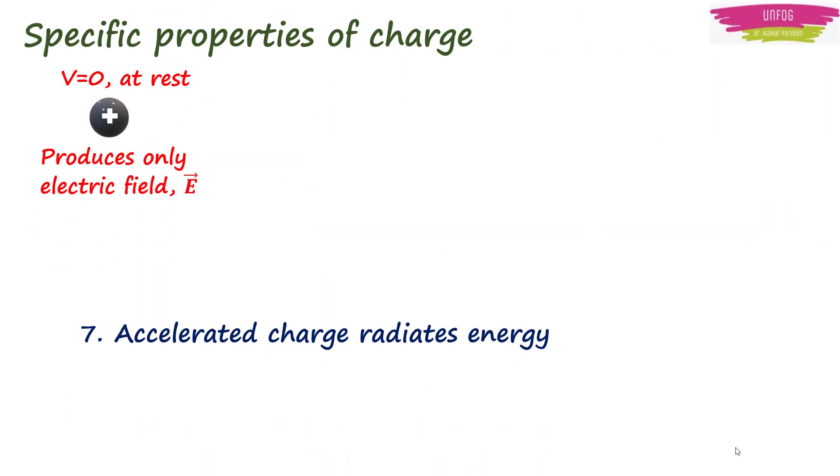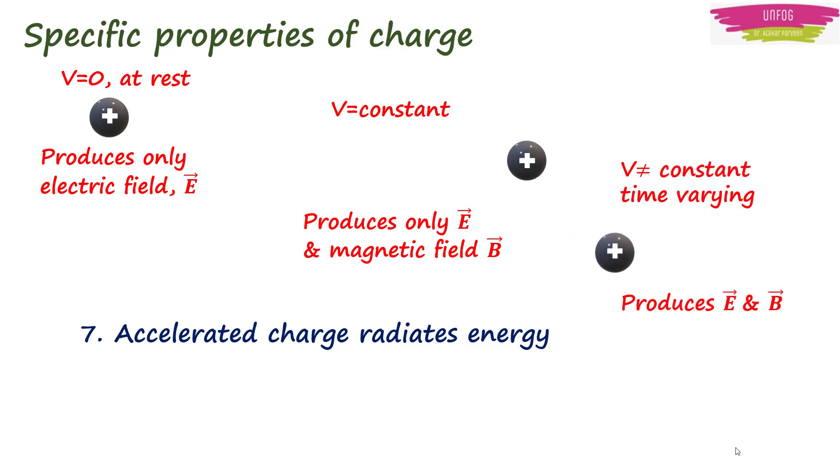Another important property of the charge is that when it is accelerated, it radiates energy. If a charged body is at rest, it produces only electric field. If the charged body is moving with constant velocity, it produces electric and magnetic fields, but no radiation. Whereas, if the velocity of the body is varying with time, it produces electric and magnetic fields and radiates energy.